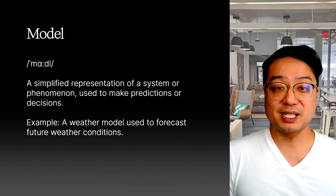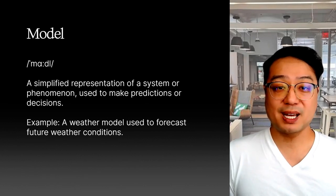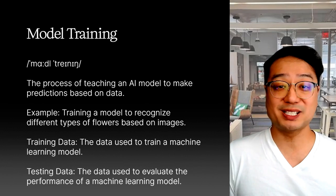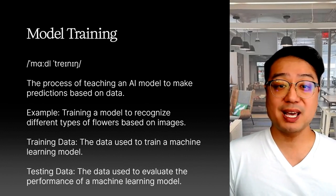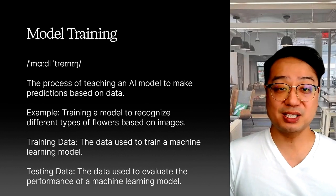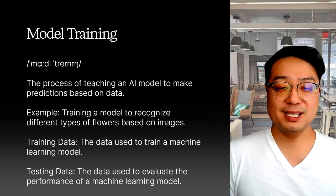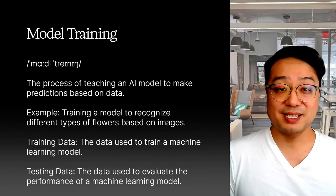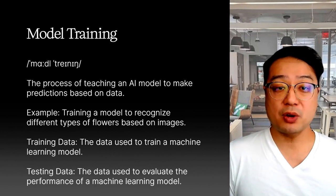The thing that learns from the data is called a model. The model is the AI's brain, and it's what we use to make predictions and decisions. Model training is the process of teaching the model using data — we feed it training data to help it learn, and then use testing data to see how well it's learned. It's like studying for a test: you use your notes, the training data, to learn the material, and then take a practice test, the testing data, to see how well you understood it.